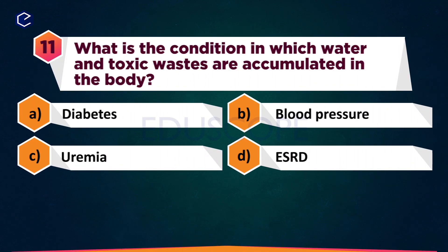What is the condition in which water and toxic wastes are accumulated in the body? A: Diabetes, B: Blood pressure, C: Uremia, D: ESRD.